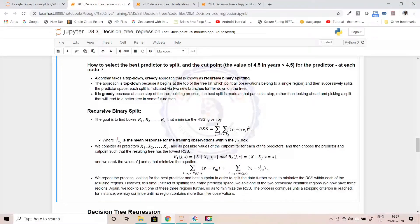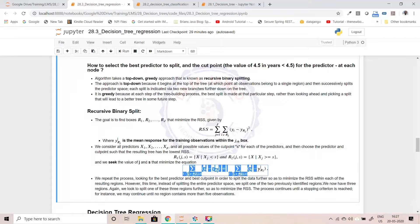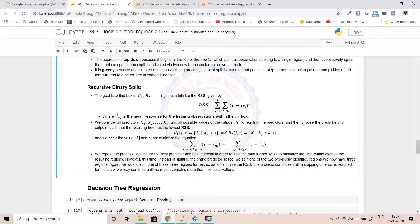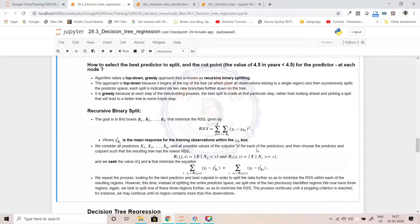R1(j,S) where xj is less than the cut point and R2(j,s) where xj is greater than S, and we calculate the RSS like this. We repeat this process looking for the best cut points which give less RSS. That's how we actually split the data, or the decision tree regressor makes the split. It is called recursive binary split algorithm.